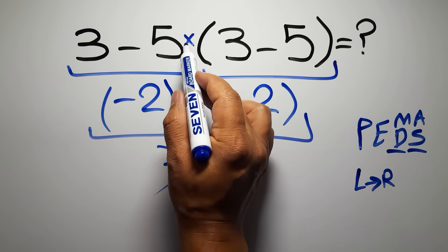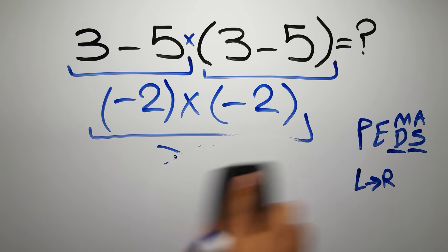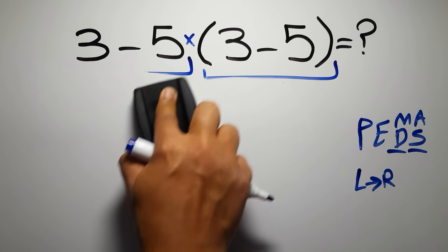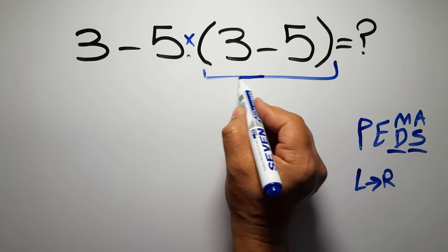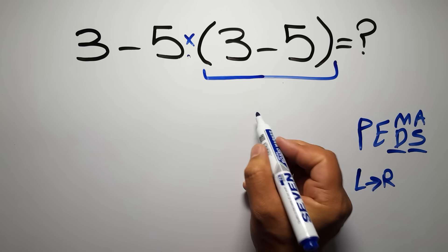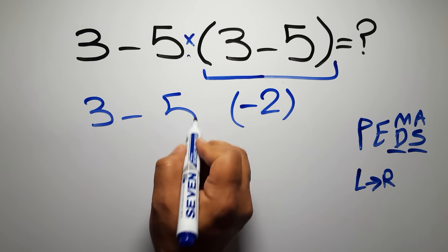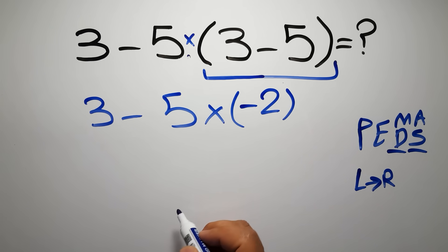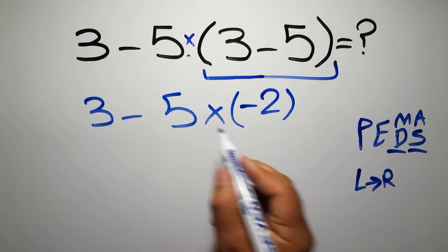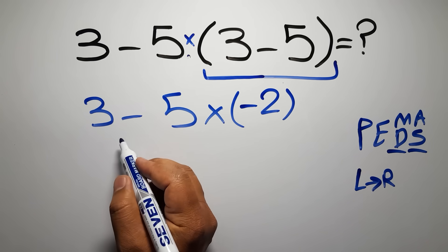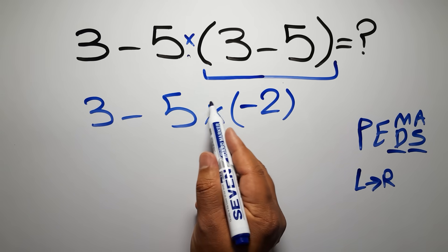If we do the subtraction before the multiplication or the parentheses, it is wrong. So first we have to do the parentheses: inside we have 3 minus 5, which gives us negative 2. Now we have 3 minus 5 times negative 2 — one subtraction and one multiplication. According to PEMDAS, multiplication has higher priority than subtraction, so first we do the multiplication.